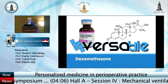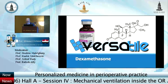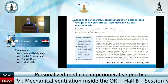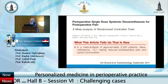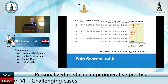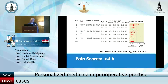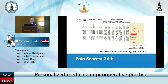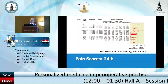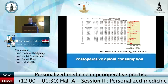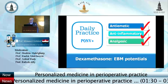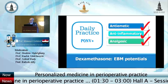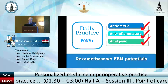Dexamethasone — we give it almost every day as an antiemetic. Does it have analgesic effect? A systematic review and meta-analysis published in the British Journal of Anesthesia and another in Anesthesiology both show it reduces pain scores in the early postoperative period, even after 24 hours, in patients who received dexamethasone 0.1 mg/kg. Postoperative opioid consumption is also less with dexamethasone. It is anti-inflammatory, and it also has analgesic effects — and we give it anyway to everybody.